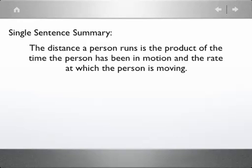So the final thing that we need to do is we need to then make some single sentence summary of what we've found. And in this instance, we'll have the distance of our person is running is the product of the time the person has been in motion and the rate at which the person is moving. And now that rate at which the person is moving is our slope. So this should say, if it was a little bit more specific, the distance a person runs is the product of the time the person has been in motion and the rate of 7.09 meters per second at which the person is moving.